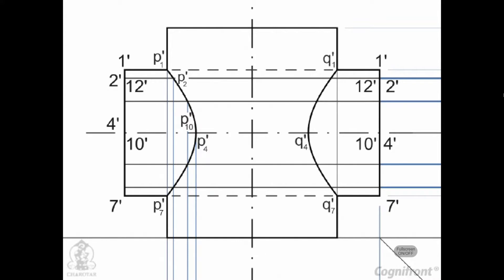Hidden portions of the curves coincide with the visible portions. Points P-1, P-4, P-7, and P-10 are the key points where the curves change direction.